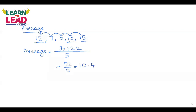The minimum value is 5 and the maximum value is 15, and the average is 10.4. This is the basic rule for average — the average always lies between the minimum and maximum values.